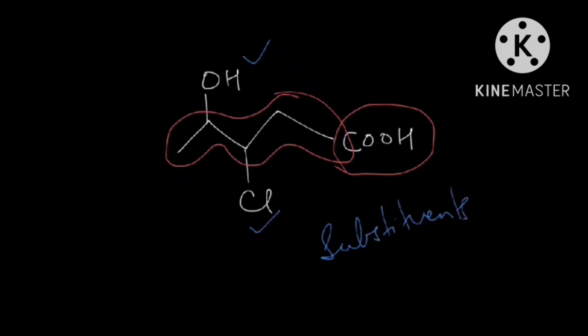To summarize once again, all those groups that are not part of the parent chain or that are not the functional group are called substituents. So guys, in this video, we looked at how to identify the substituents present in an organic compound.